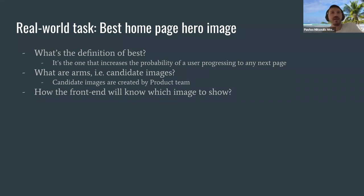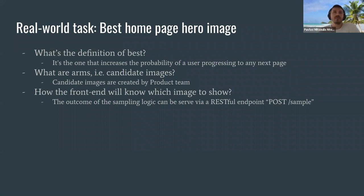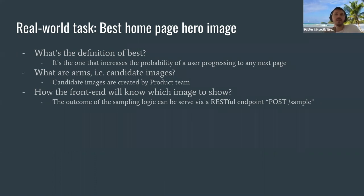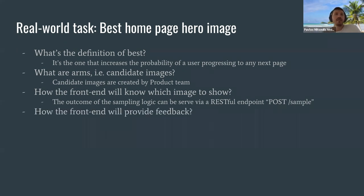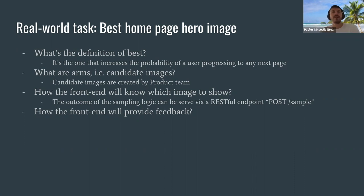The classic data scientist problem: I have something working in simulation locally, but now it needs to go to production. One solution is a RESTful sampling service with a POST /sample endpoint. Before the front end renders the homepage, it calls our service to get a recommendation from the bandit on which image to show. This needs to be super fast — I've been in situations where the 95th percentile response time was 50 milliseconds.